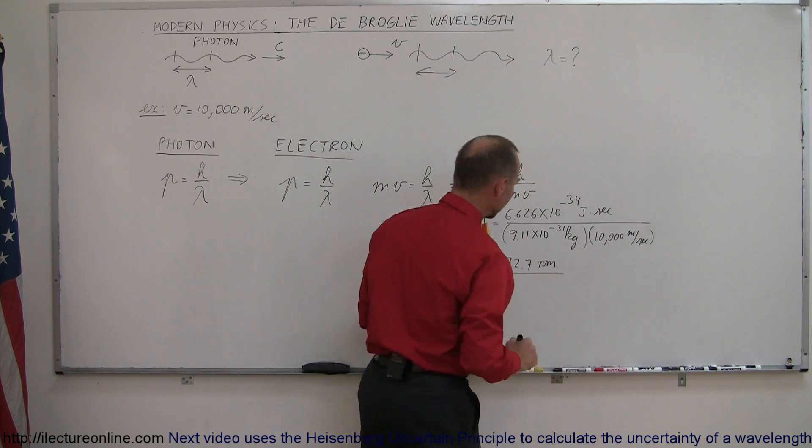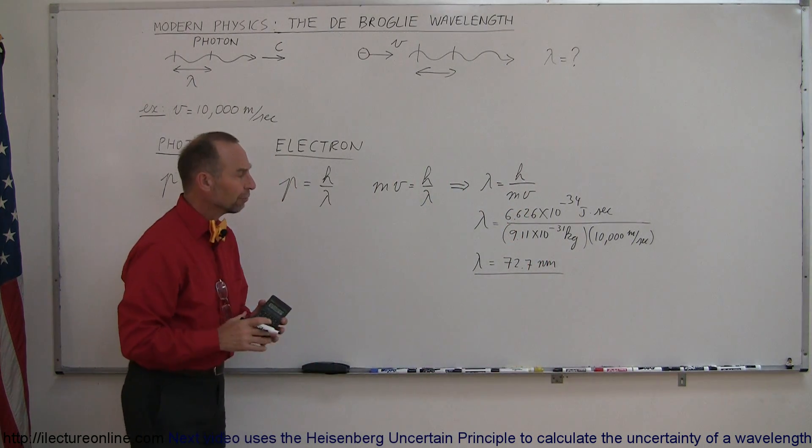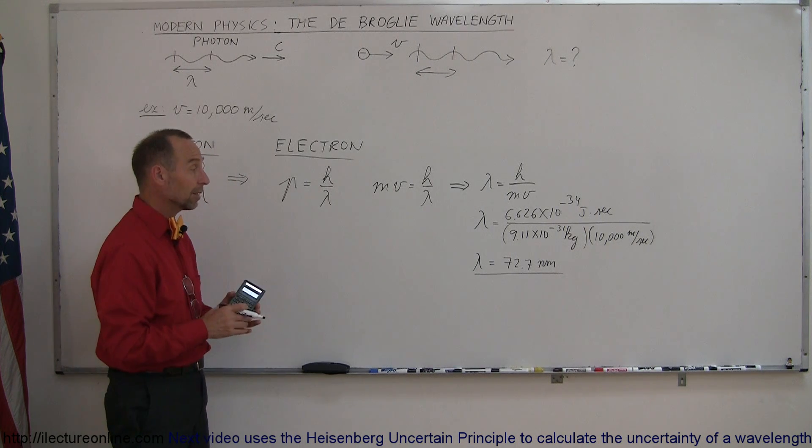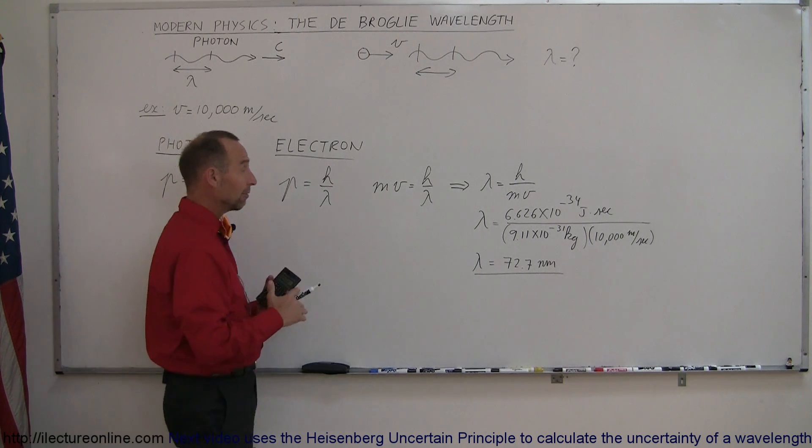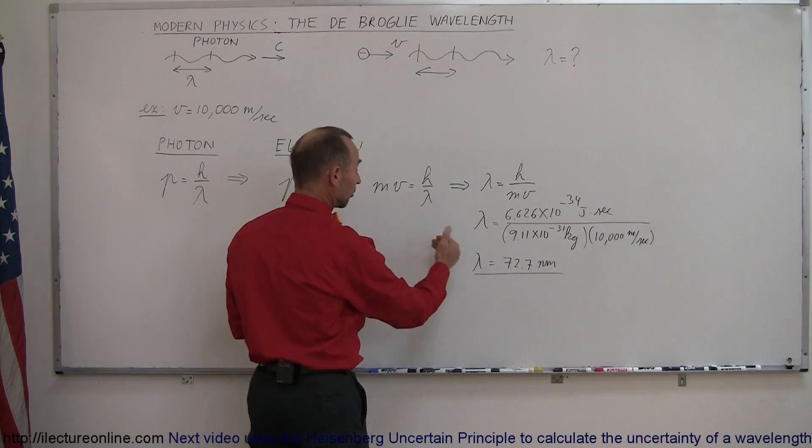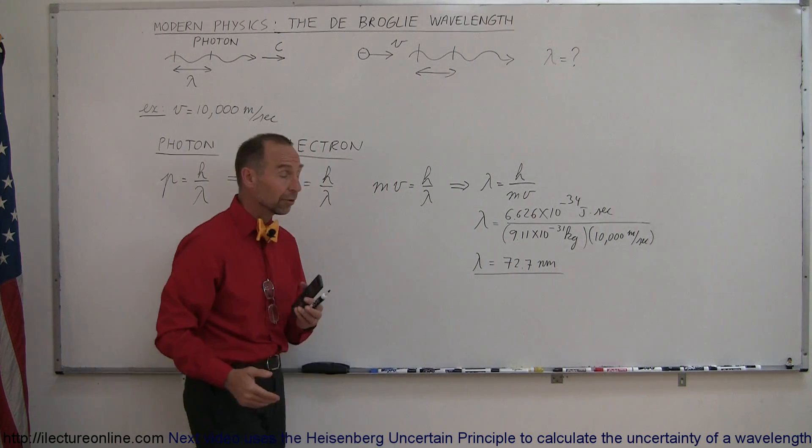Now that's kind of interesting. Remember that the wavelength of photons, visible light is between 400 and 700 nanometers, so it turns out that the wavelength of particles such as electrons is kind of comparable to the wavelength of photons.